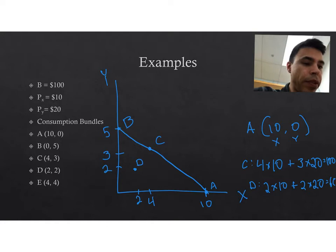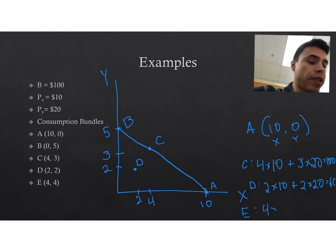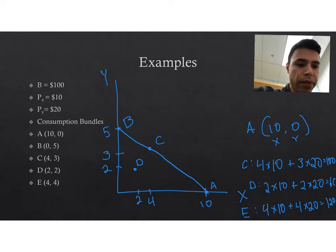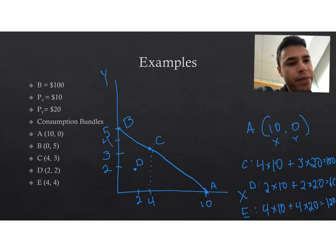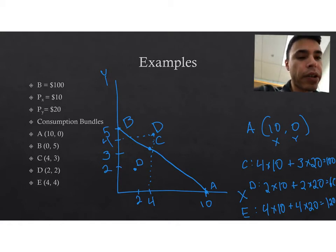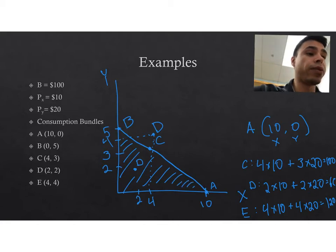Point E is a little different. At point E we purchase 4 units of good X, which costs $40, and 4 units of good Y, which costs $80, bringing us to a total cost of $120. Going from 4 on the horizontal and up from 4 on the vertical puts point E outside the triangle — that is not affordable, it's not part of the feasible set, and therefore it is an unfeasible or unaffordable point.